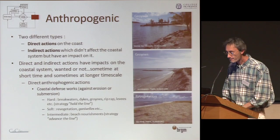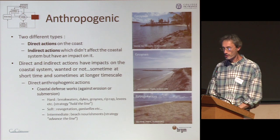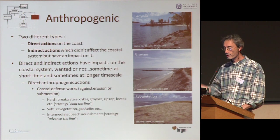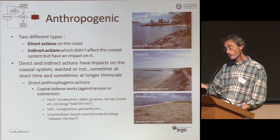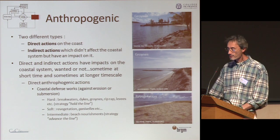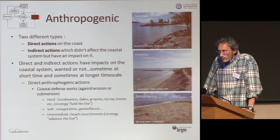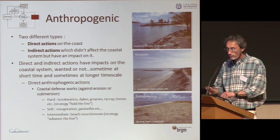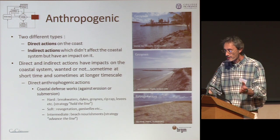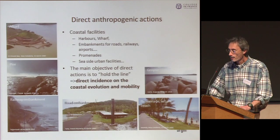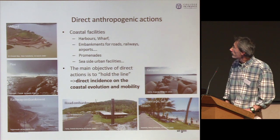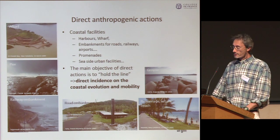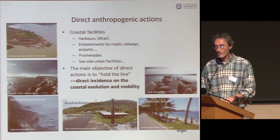Regarding anthropogenic aspects, we can distinguish two types of anthropogenic action: direct action on the coast and indirect action. Direct actions have impacts on the coastal system — these impacts are wanted or not, sometimes at short time scale, sometimes at a longer time scale. Examples of direct anthropogenic action include coastal defense works against erosion and submersion: hard engineering like breakwaters, dikes, groynes, riprap, and levées; soft works with vegetation; or intermediate approaches like beach nourishment. Other examples are coastal facilities with harbors, wharves, embankments for roads and highways, and seaside urban facilities. Generally the main objective of direct action is toward holding the line, so there is a direct incidence on the coastal evolution and mobility.